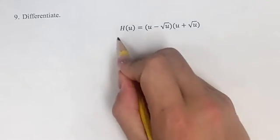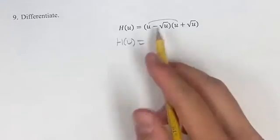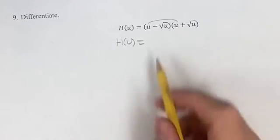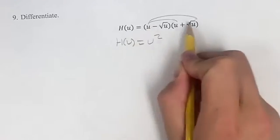So writing this out where h of u equals, again foiling, we want to make sure both of these terms are multiplied by both of these terms. So the first u times u is u squared, outer u root u